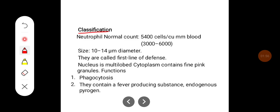Classification. Neutrophil normal count is around 5400 cells per cubic millimeter of blood, can range between 3 to 6000. The size is around 10 to 14 microns. They are called the first line of defense mechanism.